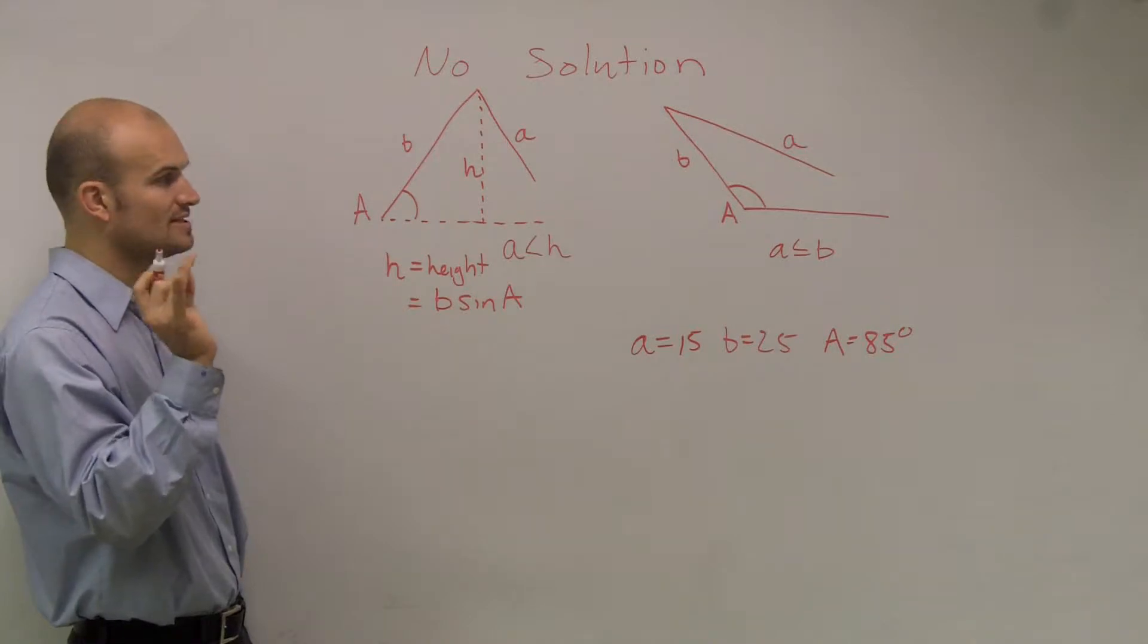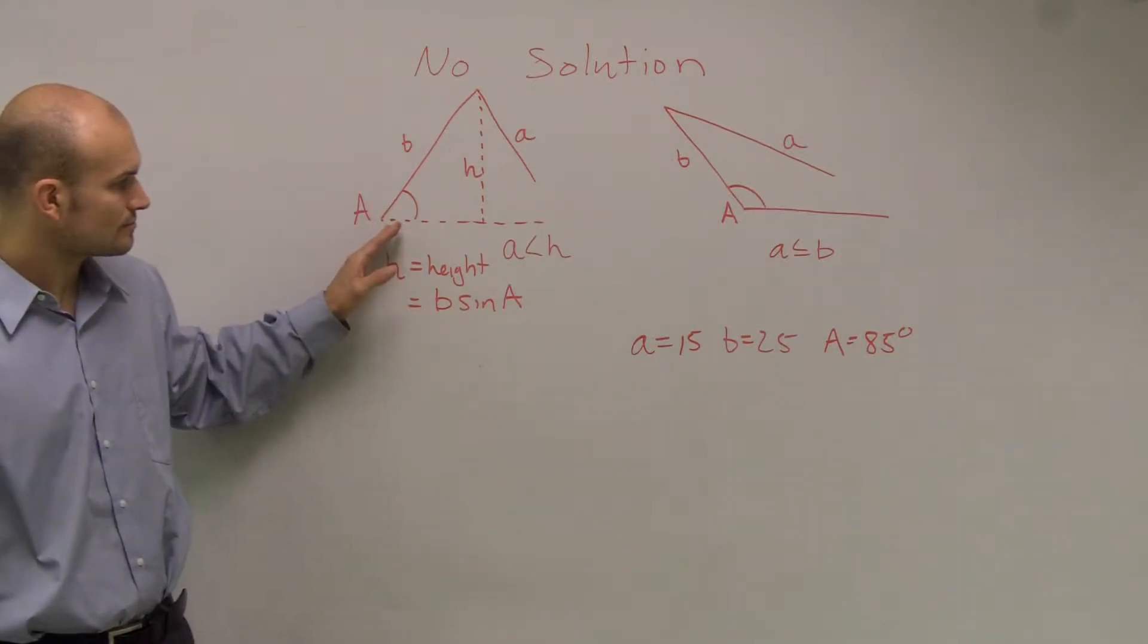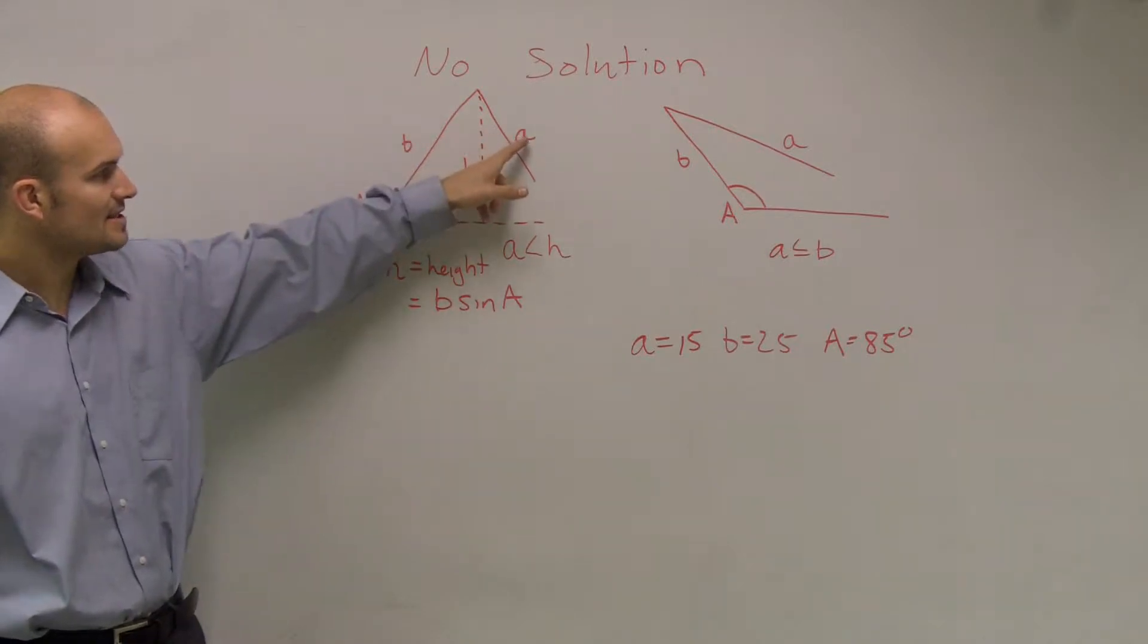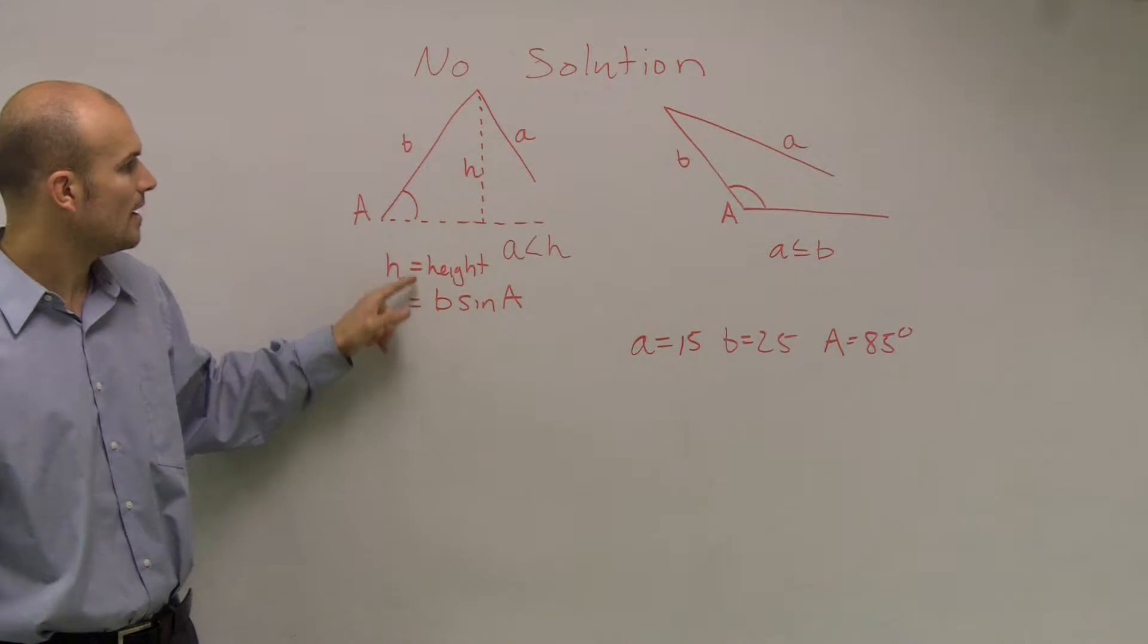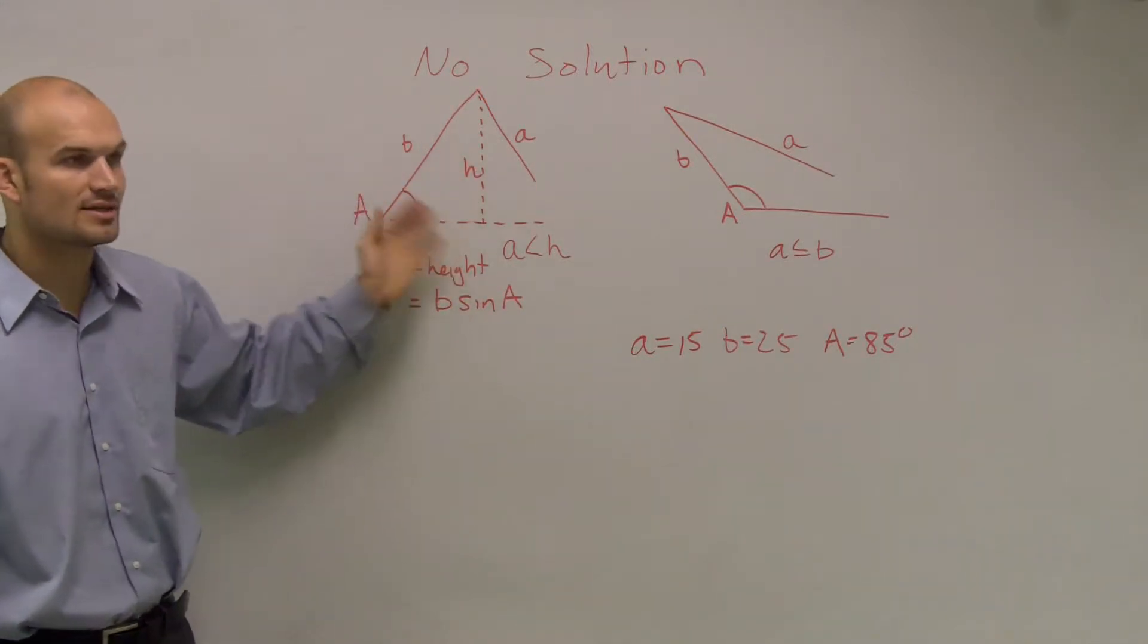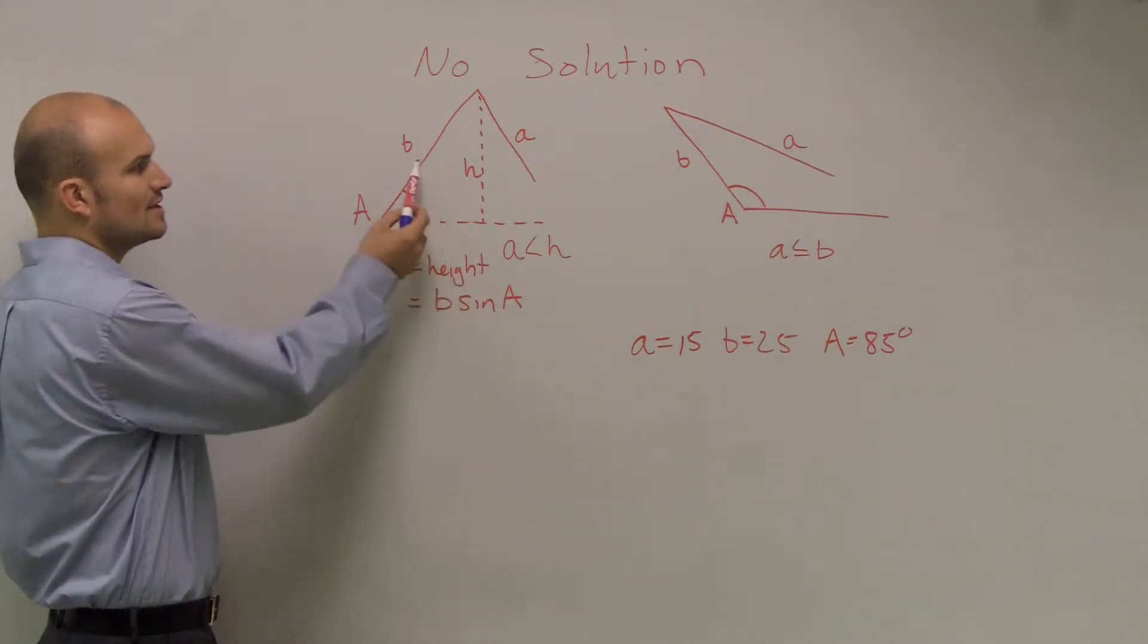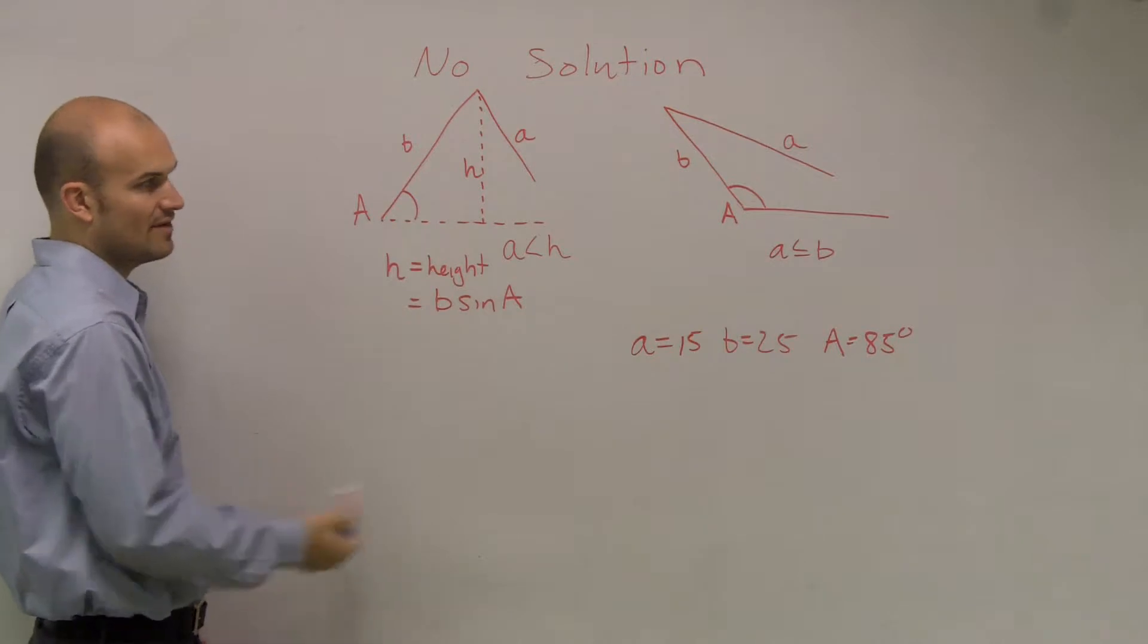If, when these two things happen, if you have an acute angle, and the side length A is less than your height, then you're going to have no solution. So how do you figure out the height? Well, to figure out the height, all you simply need to do is take your B, or your other side length, and multiply it by the sine of A.